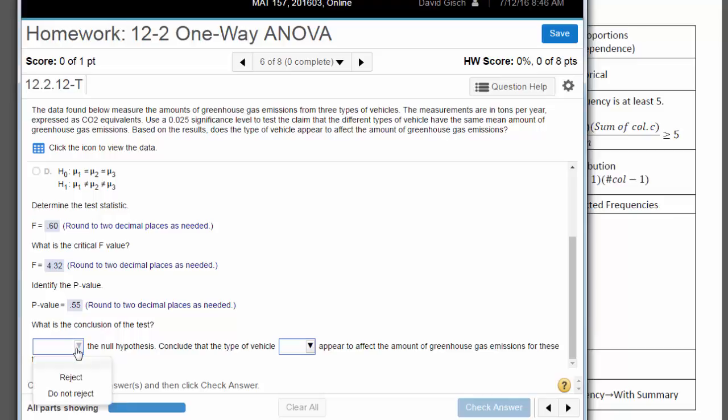So what is the conclusion? We are going to not reject the null hypothesis, and in other words, if we do not reject the null, that means we think they're all equal, so conclude that the type of vehicle does not appear to affect greenhouse gas emissions for these three types.